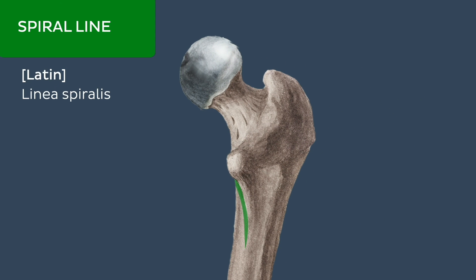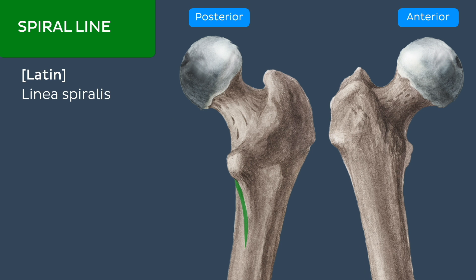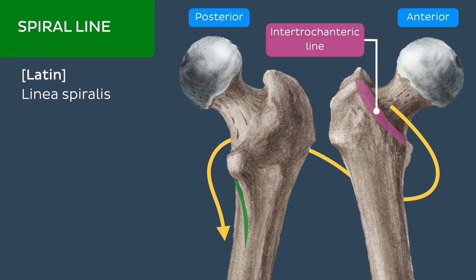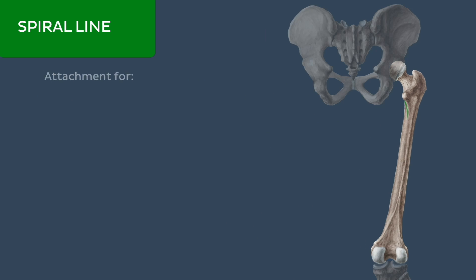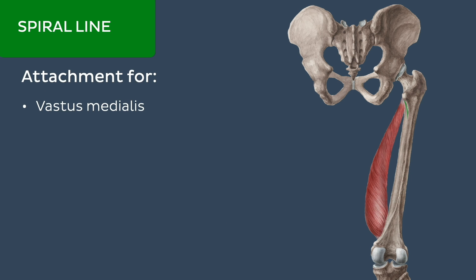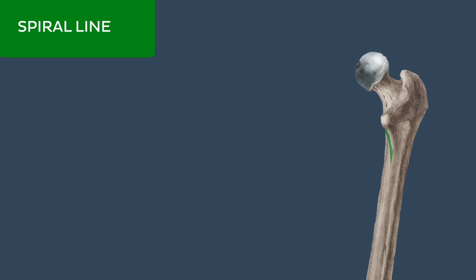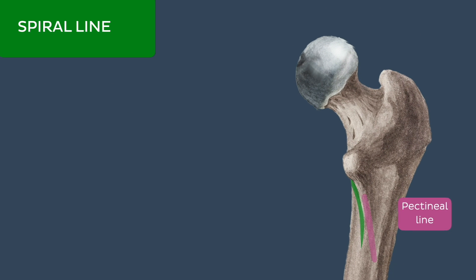Next is the spiral line, one of the lesser known landmarks of the femur. It can be described as a continuation of the intertrochanteric line, which we saw earlier, that courses or spirals just below the lesser trochanter from anterior to posterior towards the medial lip of the linea aspera. It provides a proximal attachment point for the vastus medialis muscle and sometimes also the iliopsoas muscle. The spiral line is often confused with the pectineal line due to its proximity with it.